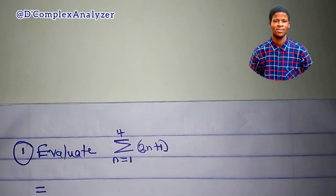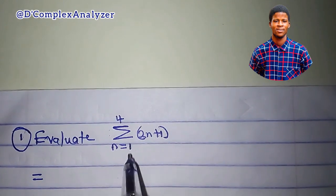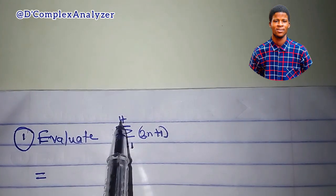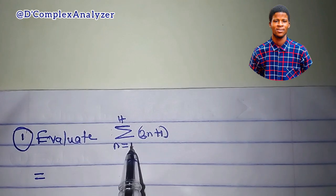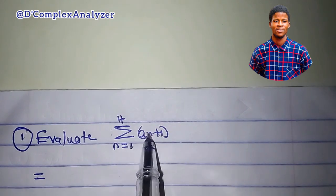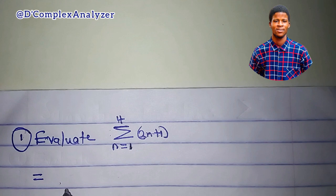Now, this is it. The values of n are 1, 2, 3, and 4. That's all, because n start from 1, and n ends at 4. So, in this expression, we'll be plugging those values individually for n.